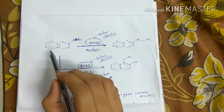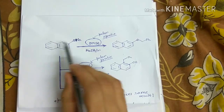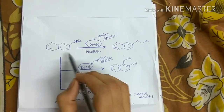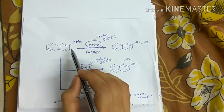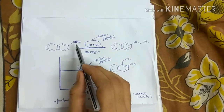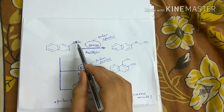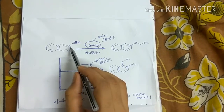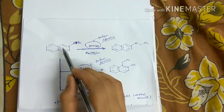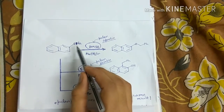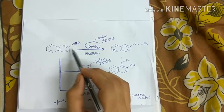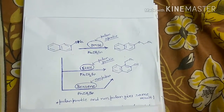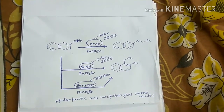In the first case, we take the naphthoxide anion — this is the naphthoxide anion, sodium naphthoxide.